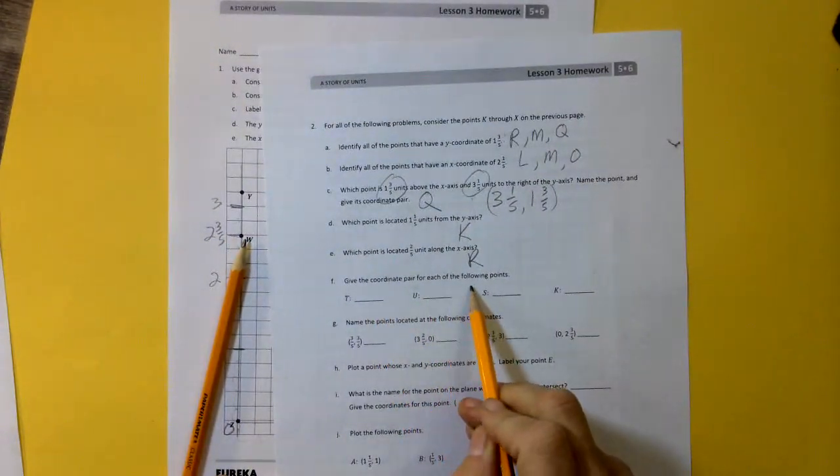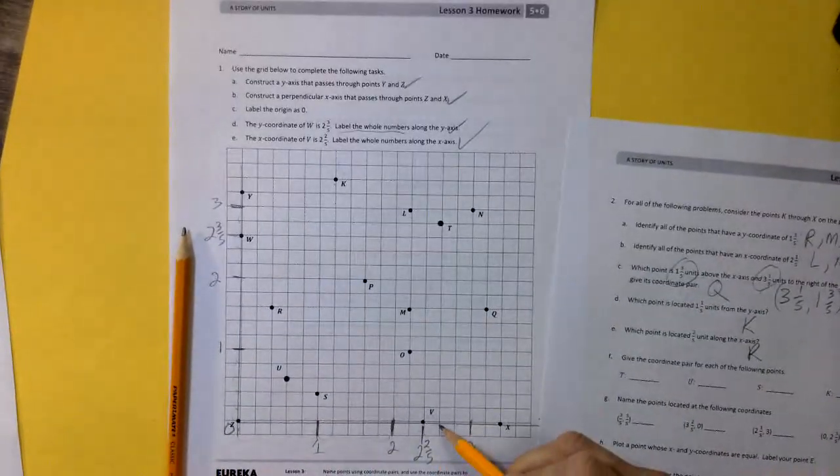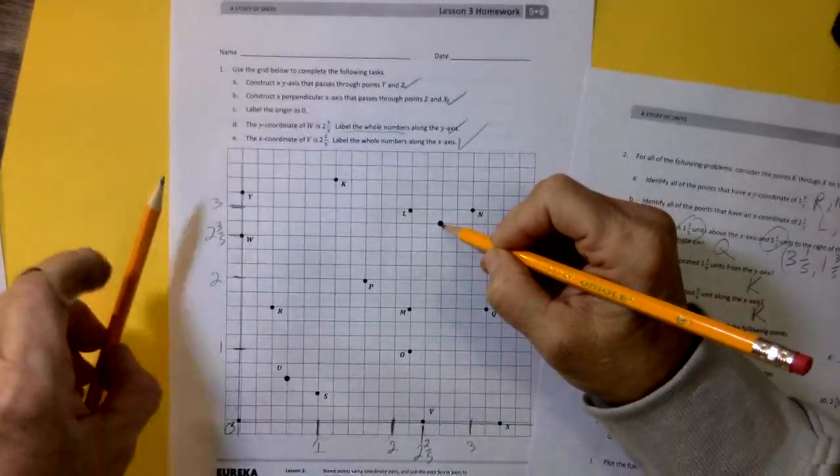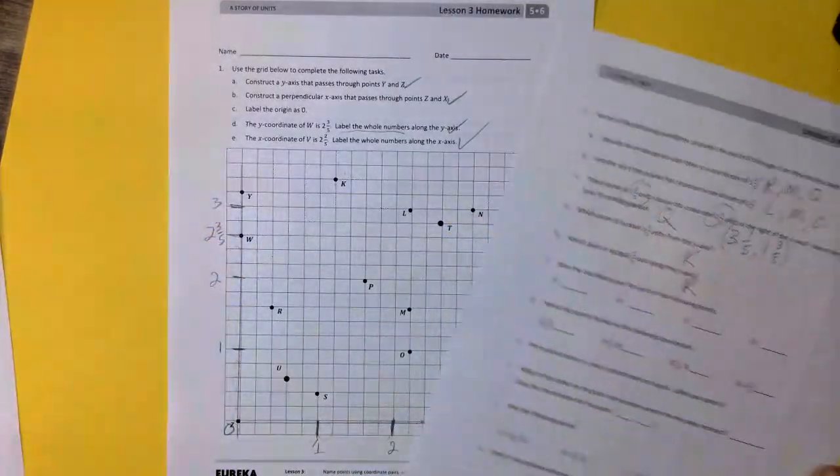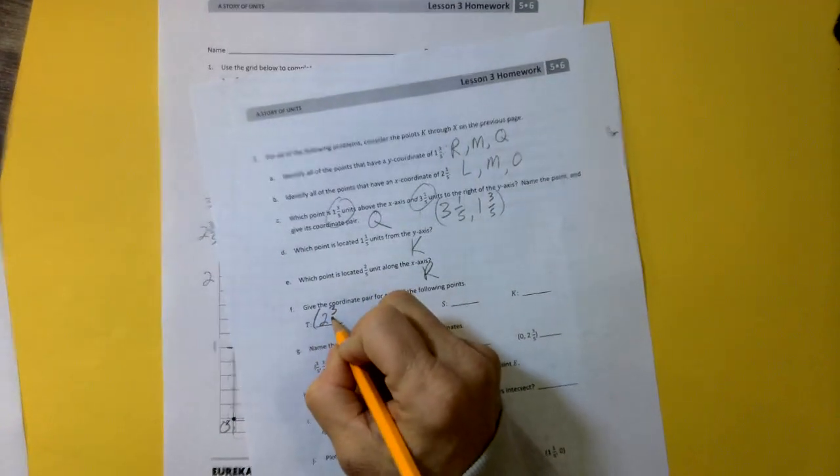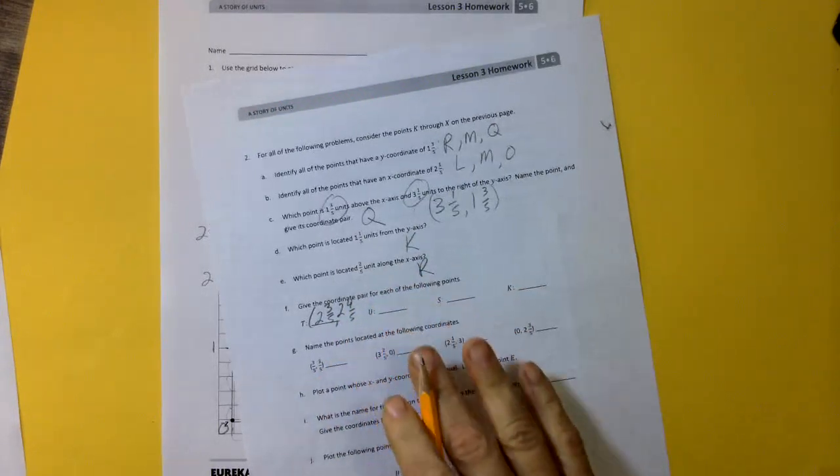Give the coordinate pair for each of the following. T. Let's find T. T is over 2 and 3 fifths and up 2 and 4 fifths. So over 2 and 3 fifths and up 2 and 4 fifths. Right?